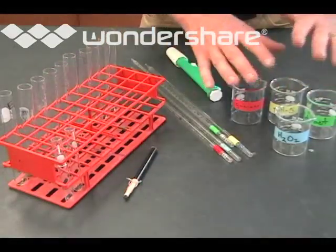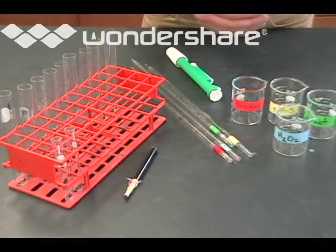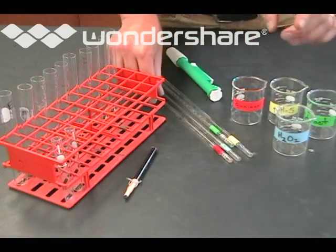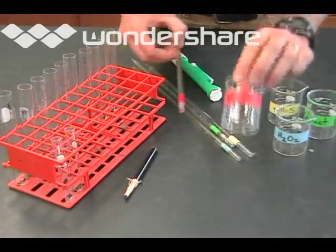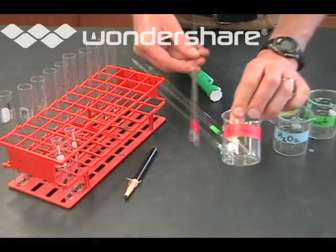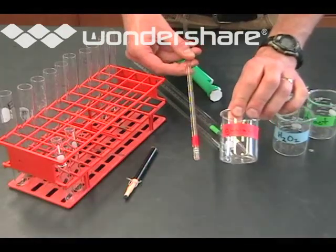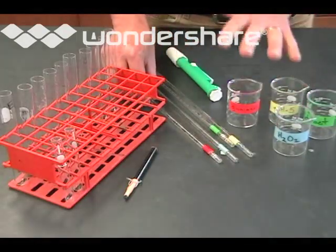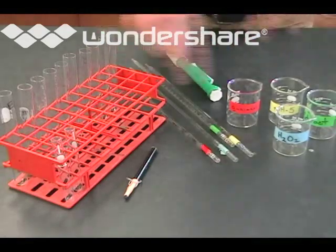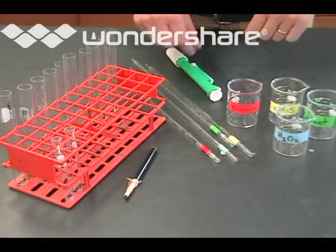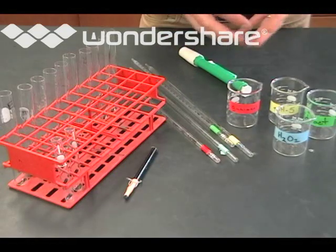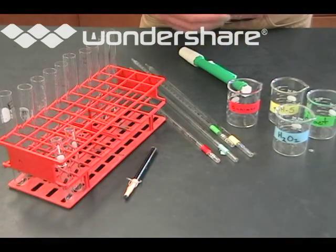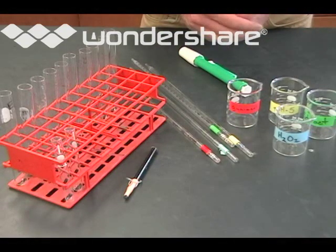These beakers over here are what you're going to use to get the reagents that you'll be using in the reaction. The most important thing to notice here is the color coding. Each one of these has a color, and they each have a matching pipette that has the same color tape on. You have to pay close attention to the colors to make sure that you're not contaminating one solution with the other, because if you get a little bit of the enzyme mixed in with some of the reactants, then your reaction is going to start before you're ready to look at it.